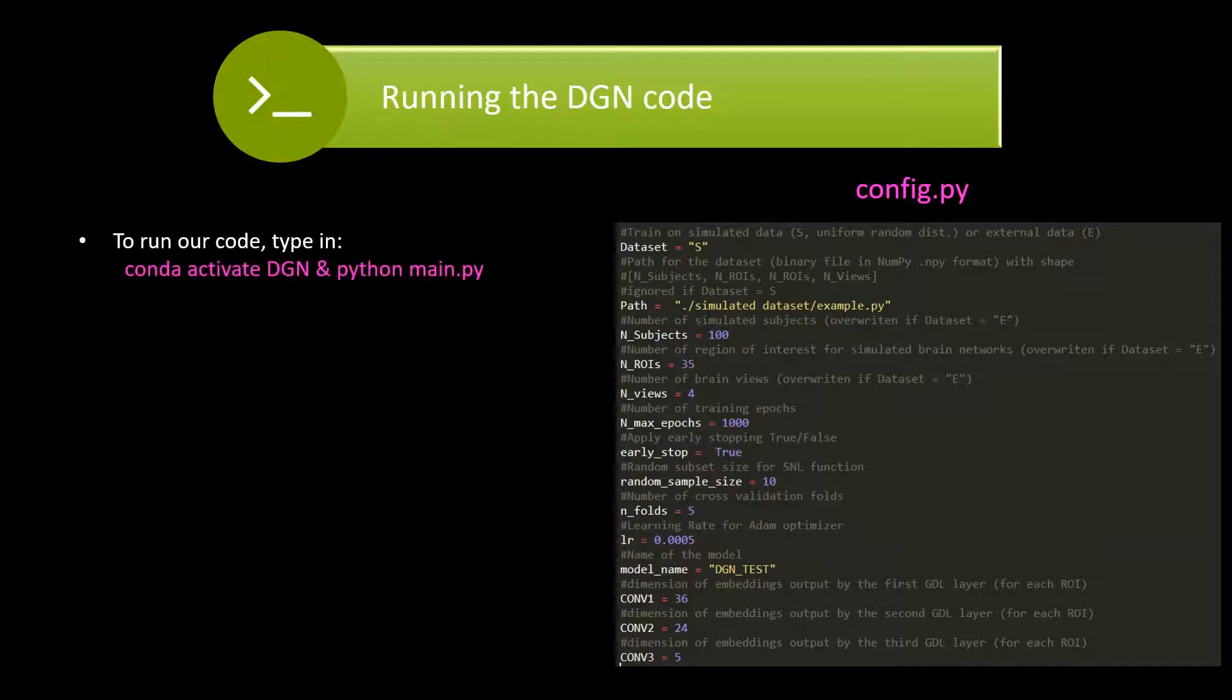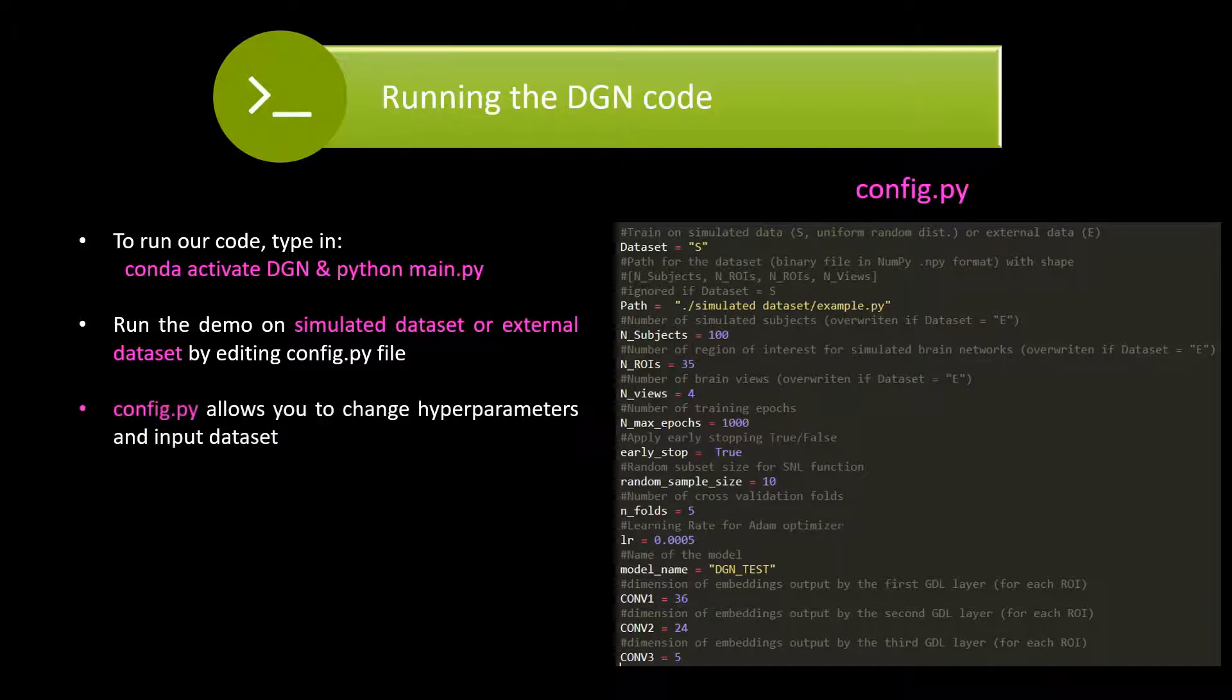To run our code, go to DGN's directory and type in conda activate DGN and python main.py. You may either run the demo on simulated dataset or external dataset by editing config.py file. Also, config.py file allows you to change hyperparameters and other options according to your needs.